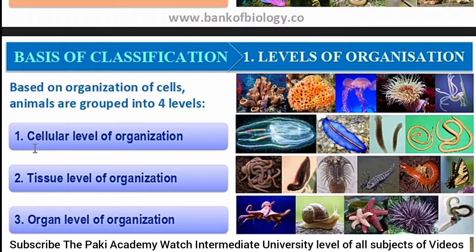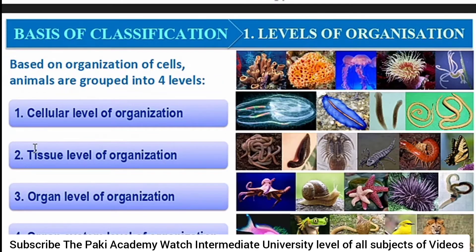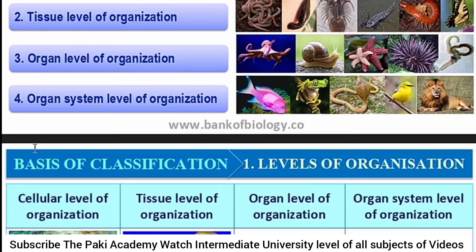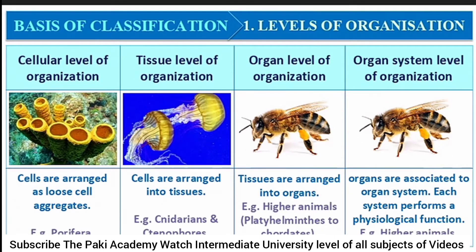Now, what are the levels of organization? There are four levels: cellular level, tissue level, organ level, and organ system level of organization. Cellular level of organization is that in which cells are arranged as loose cell aggregates, or in which cells are tightly packed. This is seen in Phylum Porifera.